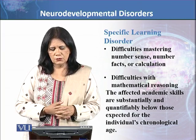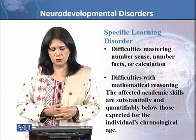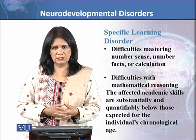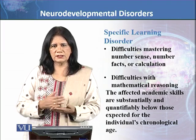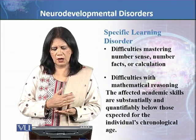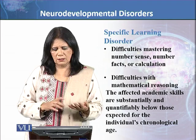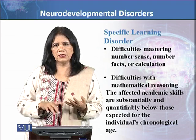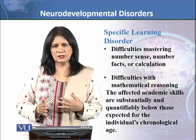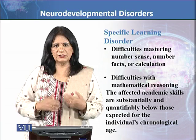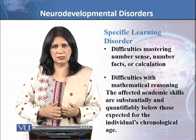The affected academic skills must be substantially and quantifiably below those expected for the individual's chronological age. For example, a six or seven-year-old child's reading, writing, and mathematics abilities are assessed against their curriculum expectations. If they are slower than, or behind, their age group or experiencing difficulties, they may be diagnosed with Specific Learning Disorders.